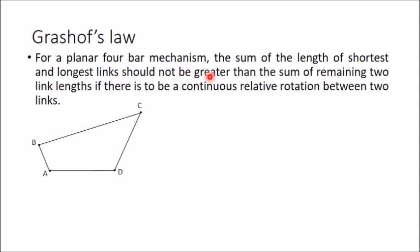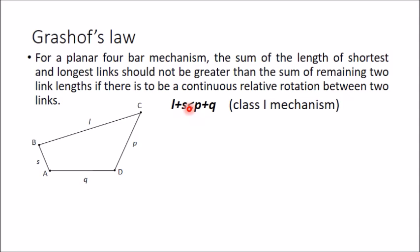Grashof's law states that in a planar four-bar mechanism, the sum of the lengths of the shortest and longest links should not be greater than the sum of the remaining two link lengths, if there is to be continuous relative rotation between two links. If you want rotational motion for at least one link, it is necessary that L plus S ≤ P plus Q.